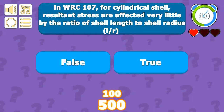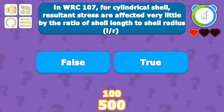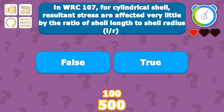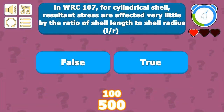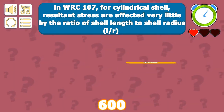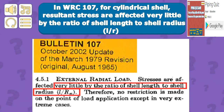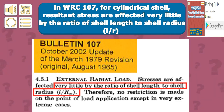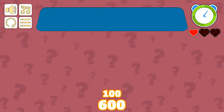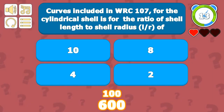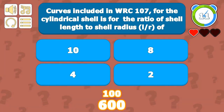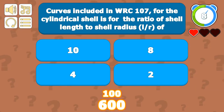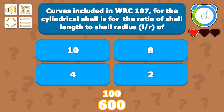In WRC 107 for cylindrical shells, resultant stresses are affected very little by the ratio of shell length to shell radius — it's only slightly affected, around 10%. The curves included in WRC 107 for the cylindrical shell are for a shell length to shell radius ratio L/R of 8.